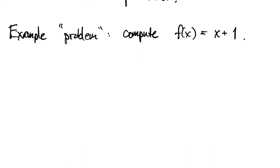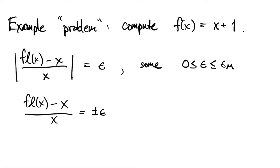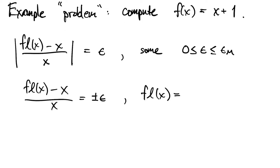Now floating-point representation guarantees for us that the difference between the floating-point representation of x and x itself is small in a relative sense. So we'll call that relative difference plus or minus epsilon, where we know that epsilon is less than machine epsilon. We can write that the floating-point representation of x is x times 1 plus or minus this epsilon.